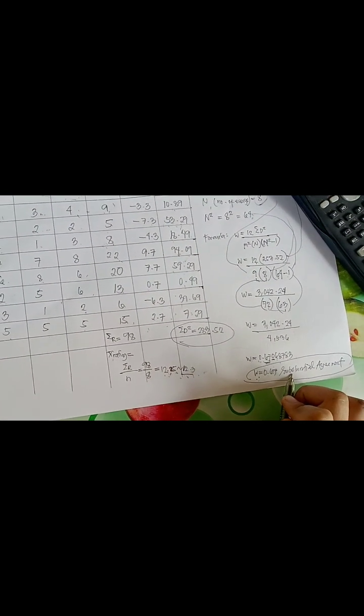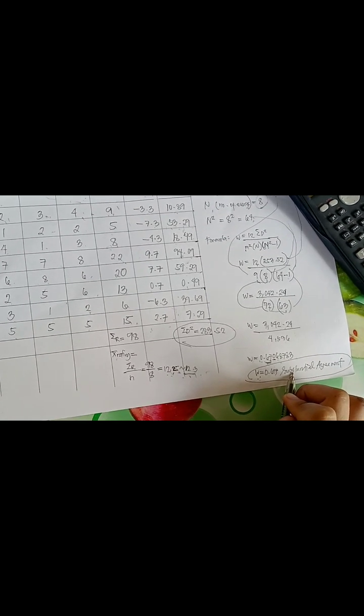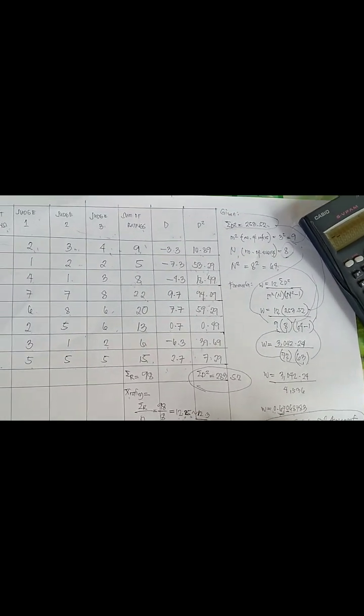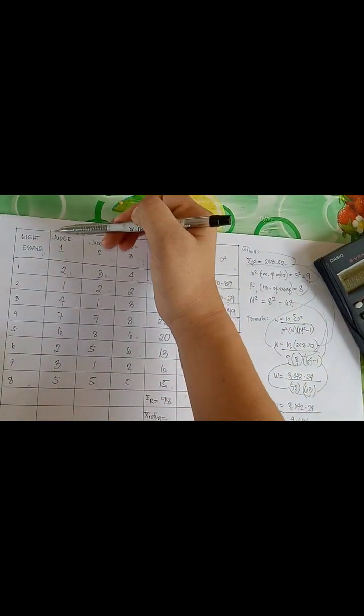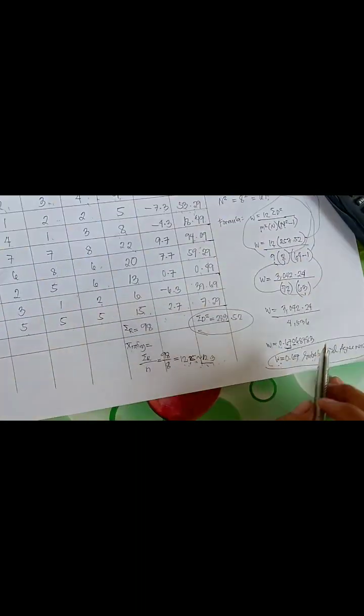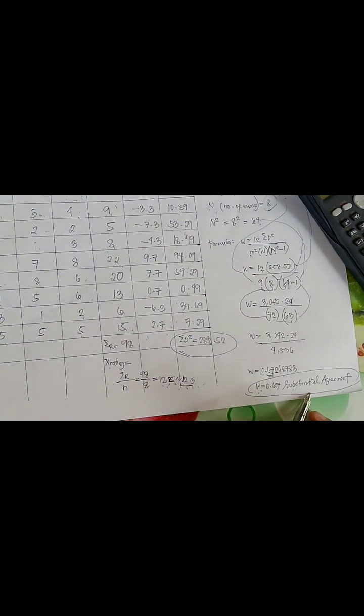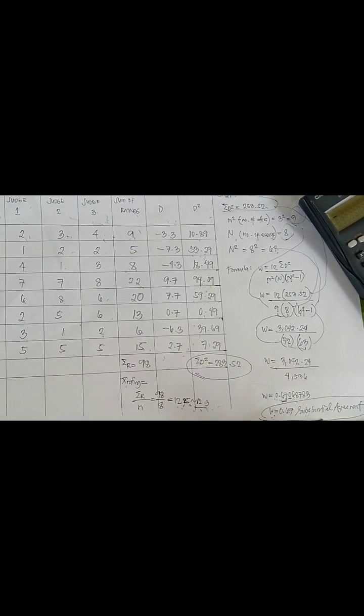A Kendall's W coefficient value of 0.67 indicates the arrangement of the three judges in the eight essays. And accordingly, there is a substantial agreement among the judges or the raters. And that concludes our problem solving.